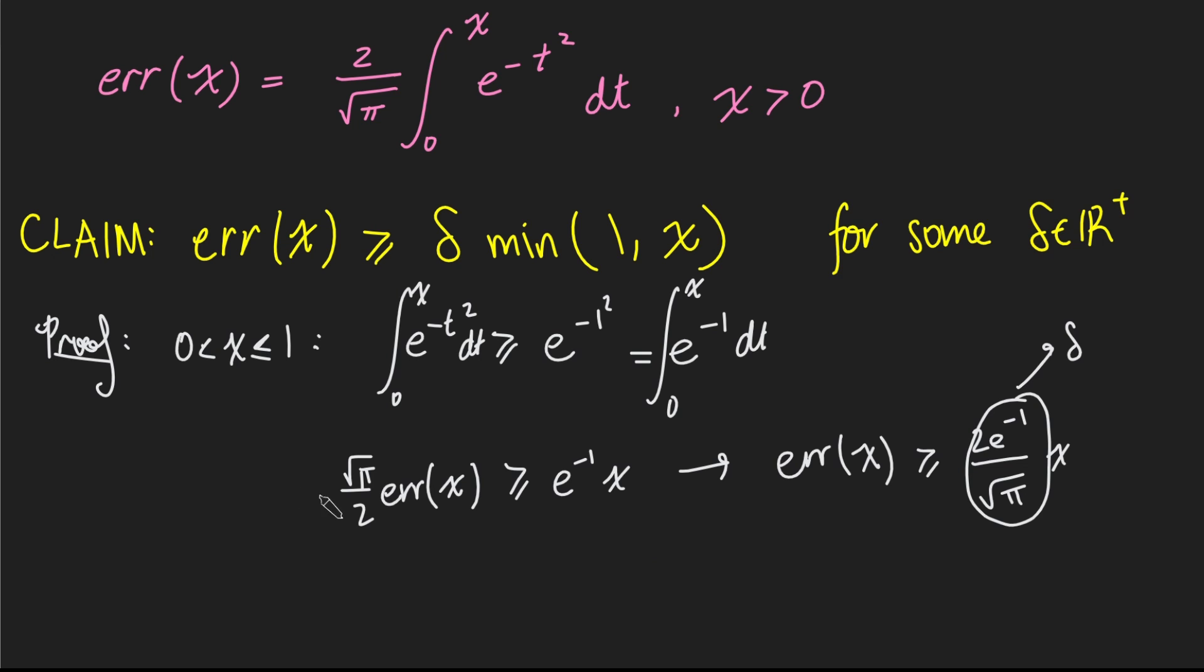Now, what about if x is bigger than 1? So if x is bigger than 1, well, we get something much simpler. Error of x is certainly going to be at least error of 1. Well, why is this? Well, we can clearly see that error of x is an increasing function, because e to the negative t squared is strictly positive.